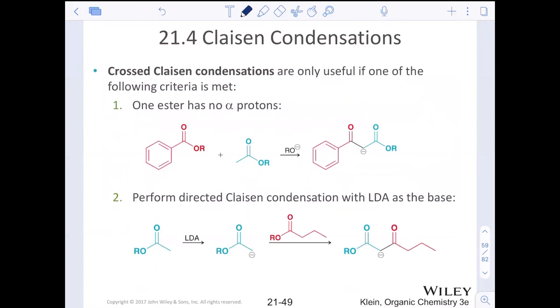Cross-Claisen are also useful if very certain criteria is met. One ester has no alpha protons. Again, keep it simple. Or again, we can use direct Claisen condensation with LDA, very similar to what we just saw with our aldol condensations that were crossed.